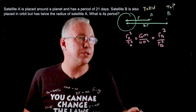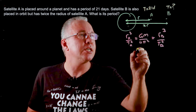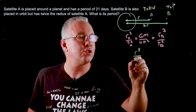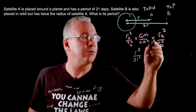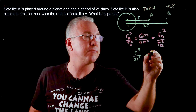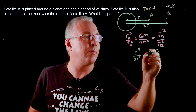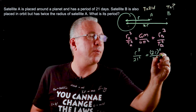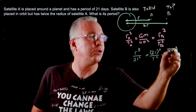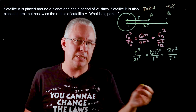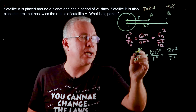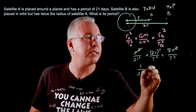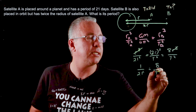Substituting in, the radius of A is simply R, so we get R³ over 21² for A. For B, the radius is 2R, so we have (2R)³ over T². Expanding that gives 8R³ over T². We can now cancel the R³ terms from both sides, leaving 1 over 21² equals 8 over T².